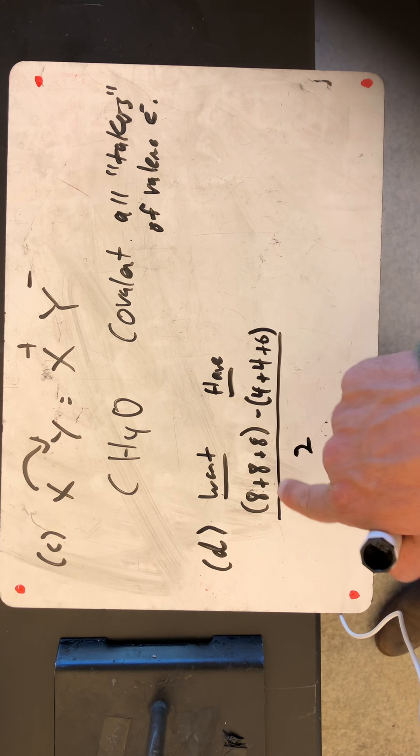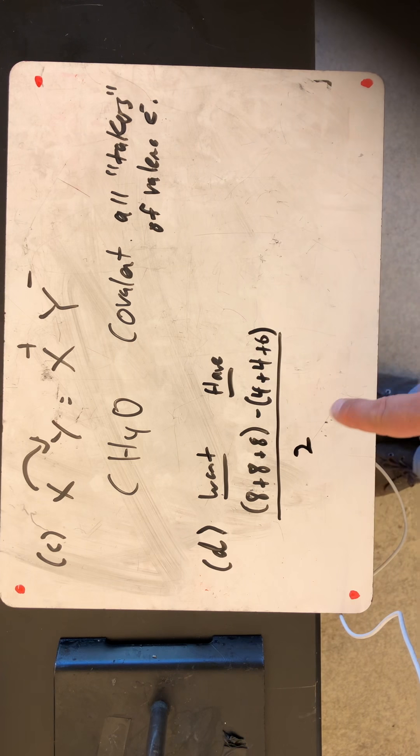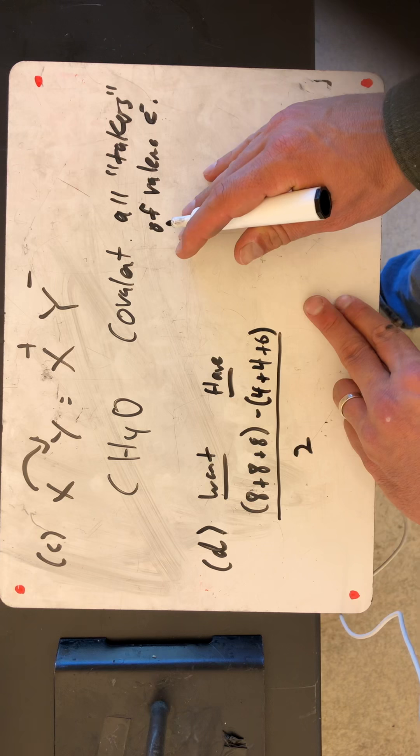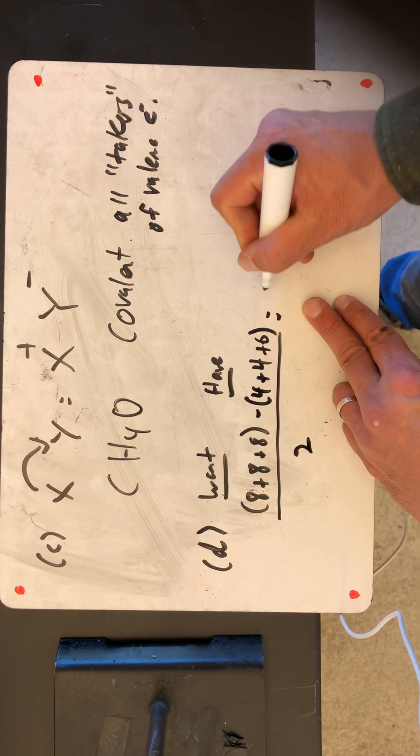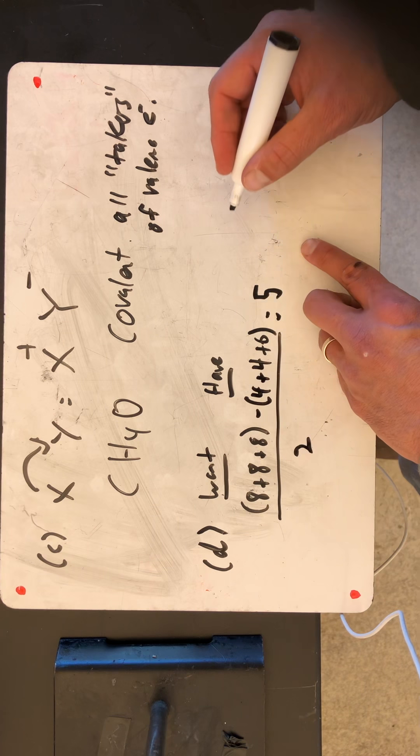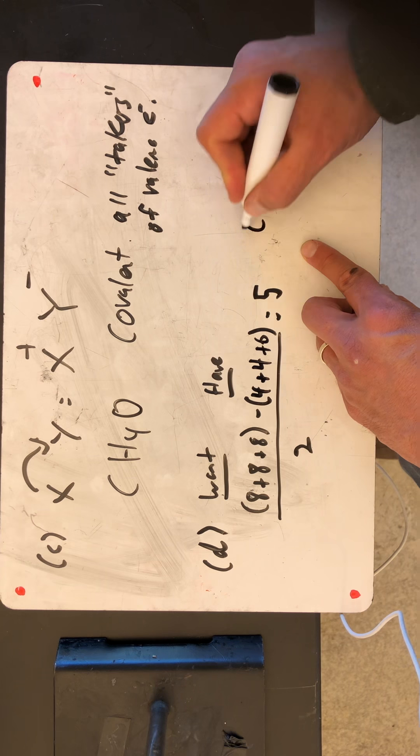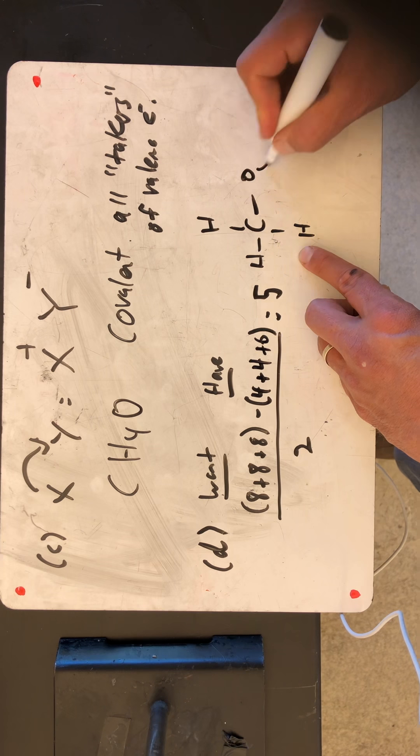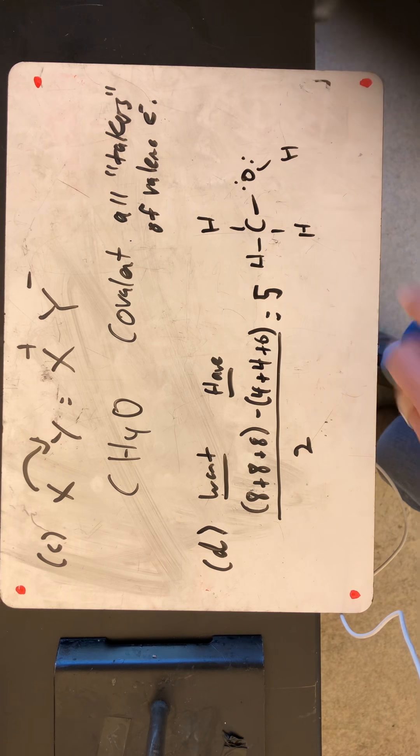So in this case, we have 24 minus 8 plus 6, which is 14 divided by 2. That is 5 covalent bonds. And there's a lot of different ways you can draw it. But the best way to draw it is one in which carbon has the bonds that it is supposed to have. That's 4.